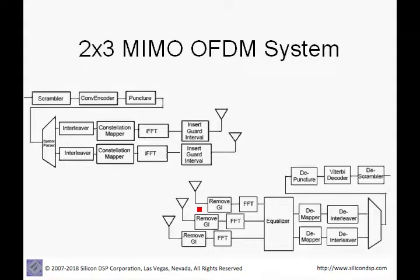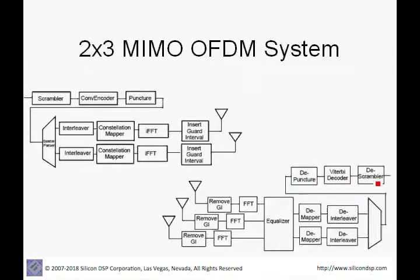At the receiver we have three receive chains — again a simplified model. At each receive chain we remove the guard interval and perform a forward FFT. We then pass these receive chains into a MIMO equalizer which separates the two spatially multiplexed channels into two separate channels, which then go through the de-mapper and de-interleaver and are combined, then through the de-puncture, the Viterbi decoder, and the de-scrambler.